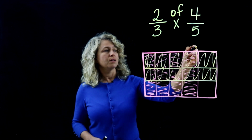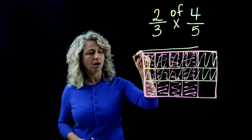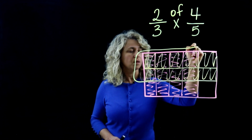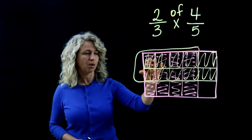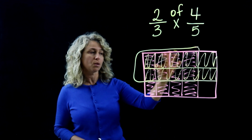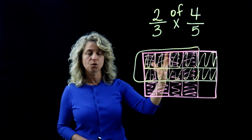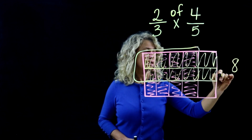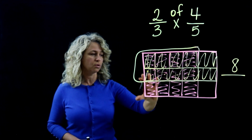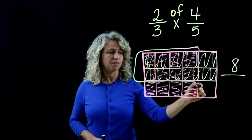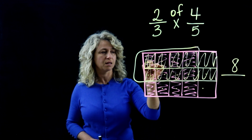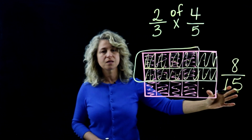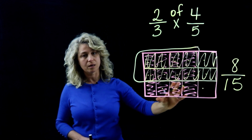Now here's the interesting part. You circle the part that is overlapped by both colors. Count the double-overlap squares — that's your numerator: one, two, three, four, five, six, seven, eight. Then count the total number of squares: one through fifteen. So fifteen is your denominator — eight-fifteenths.